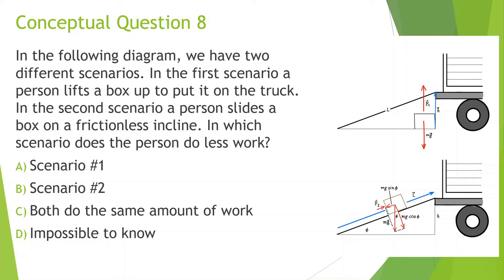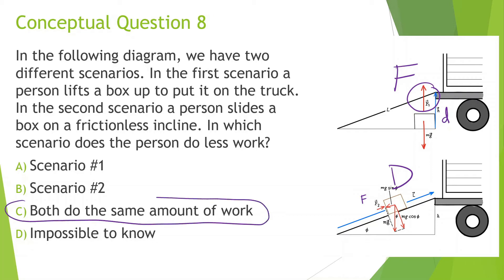Conceptual question 8: In two scenarios, a person either lifts a box directly onto a truck or slides it up a ramp on a frictionless surface. In which scenario does the person do less work? Lifting requires more force but a smaller distance. Sliding requires less force but a larger distance. These compensate for each other, so actually both scenarios require the same amount of work.